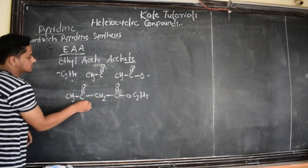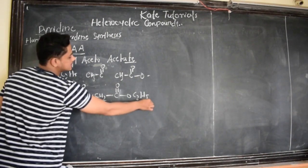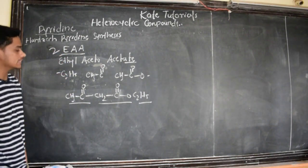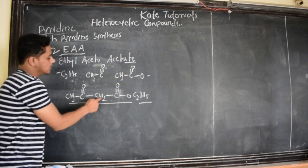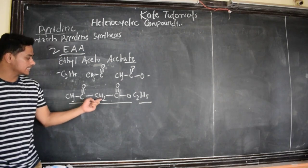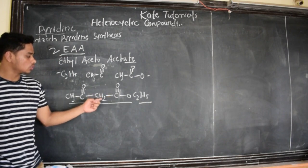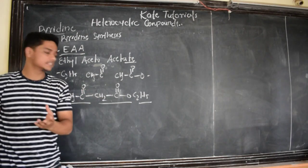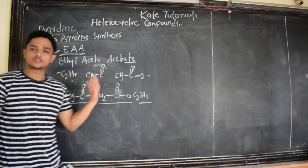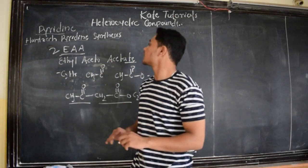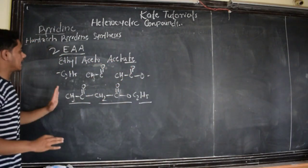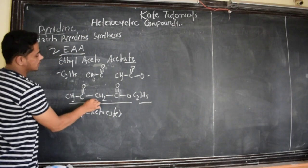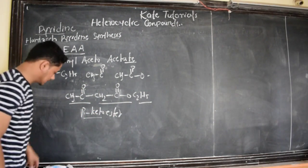This is EAA — ethyl acetoacetate. Here, this is the ester group, this is the alpha carbon, and this is the beta carbon. So beta-ketoester — ester group is the main group, alpha carbon, beta carbon, and here we have the ketone group. So: beta-keto-ester. This is about EAA.